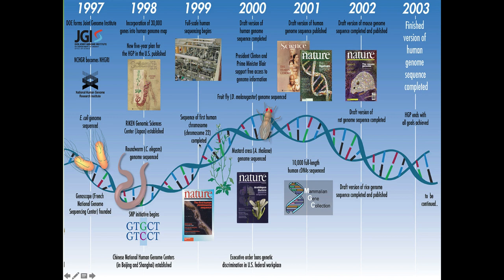We also finished the sequence of the first human chromosome — chromosome 22. Things started moving quickly around this time. J. Craig Venter's institute said they could finish sequencing the genome by 2003, which really pushed the public institutions — the NHGRI — to get going. By 2000 they had created a draft version of the human genome sequence. Clinton and Tony Blair came out in support and said it should be free and accessible — a big deal, as they were competing with this private organization to release a public version.